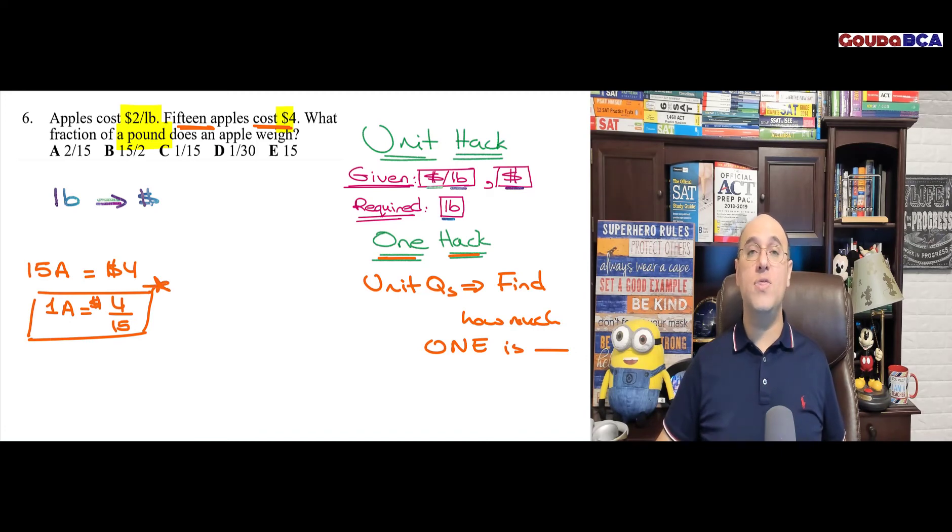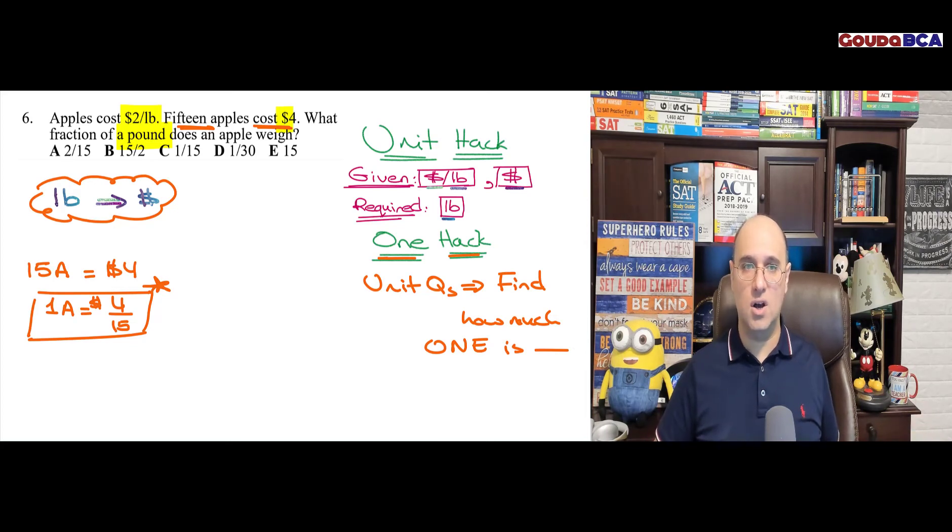So that's the first thing. Now, go write the relationship that we know we need to use using our unit hack, which is pounds and dollars, and just start with what you have. So given right here, I know that apples cost $2 per pound.